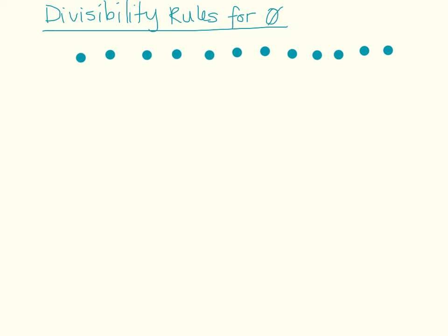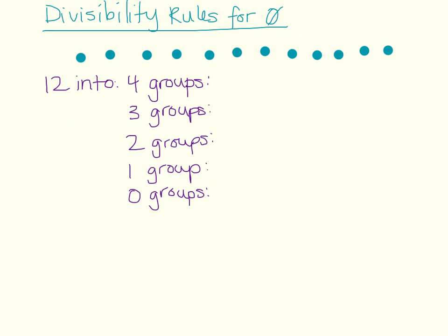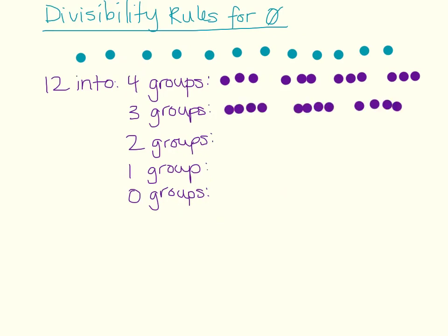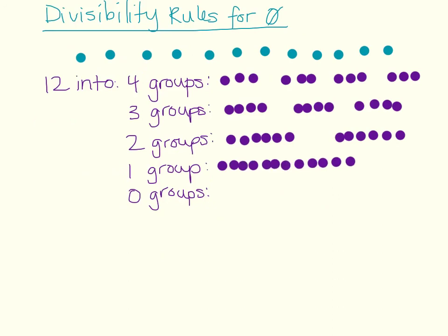Finally, let's look at the divisibility rules for 0. There are 12 dots on your screen. Pause the video and put them into groups of 4, groups of 3, groups of 2, groups of 1, and then groups of 0. If I split 12 into 4 groups, there are 3 in each group. Into 3 groups, there are 4 in each. Into 2 groups, there are 6 in each. And into 1 group, there are 12. But I can't put them into 0 groups — by virtue of the fact that there are actual numbers, I can't take 12 and put it into no groups. There has to be at least 1 group.